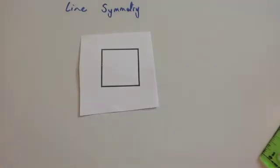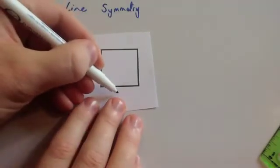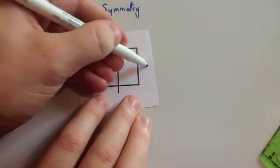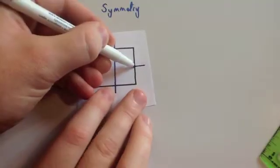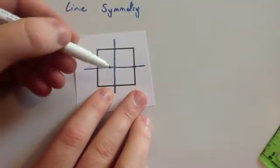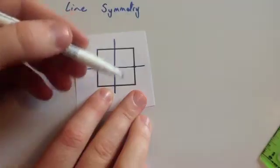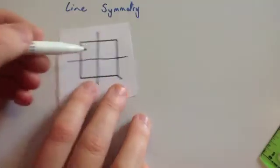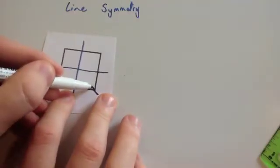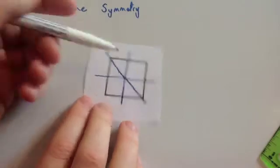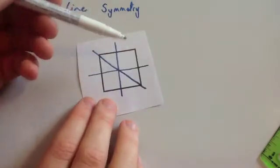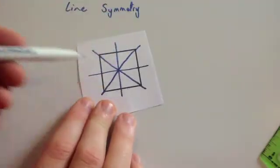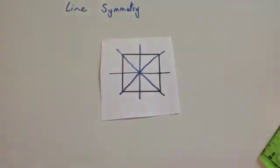A square has got four lines of symmetry. It's got a vertical line — because it would fold over this way. It's got a horizontal line — and please draw these with a ruler in your book whenever you're drawing them — so it would have a horizontal line of symmetry, and it would fold over this way and look exactly the same. Also, a square has got a line of symmetry diagonally, because if you were to fold it over diagonally it would fit exactly on top of itself. And likewise, if you were to fold it over the other diagonal, it would have a line of symmetry. So that means it's got four lines of symmetry.